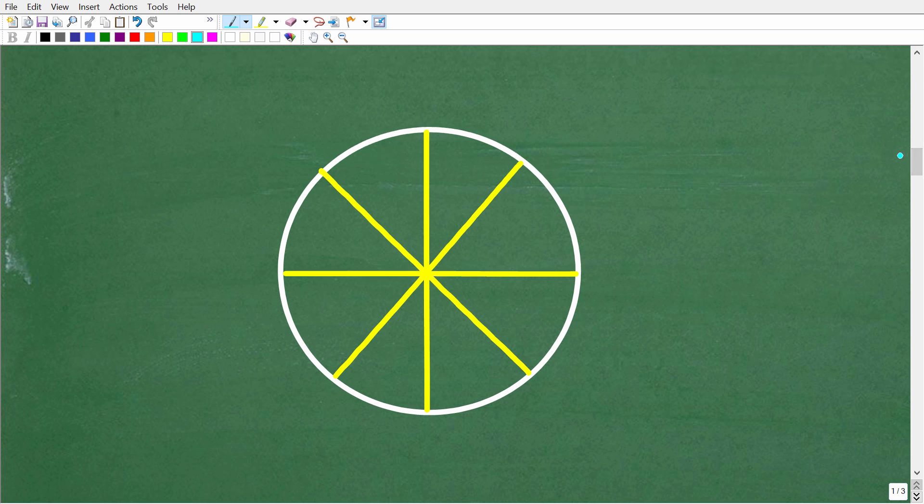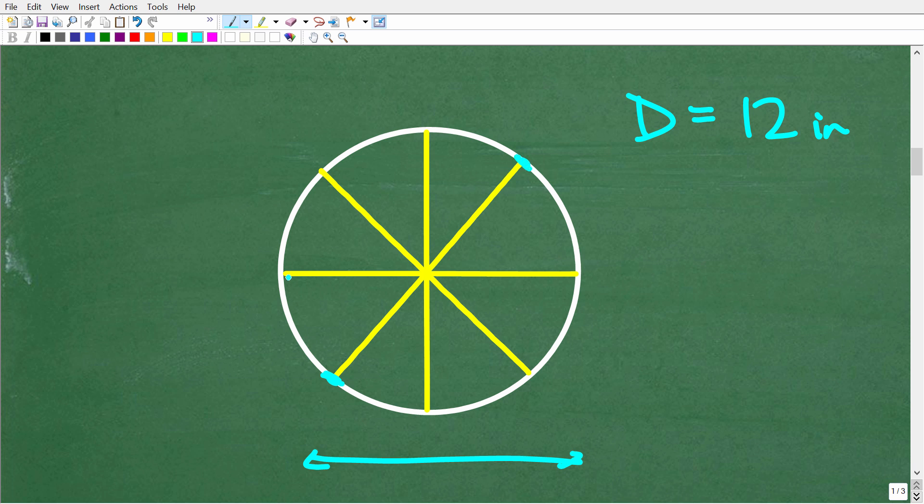So here is my pizza and again it's 12 inches wide. Now in geometry we have another word for the width of the circle and that is called the diameter. So the diameter here is 12 inches. Now if you were going to measure the width of the circle you can go from here to here or maybe from here to here, doesn't make a difference but what's important is that all these diameters run through the center of the circle.